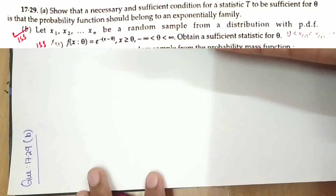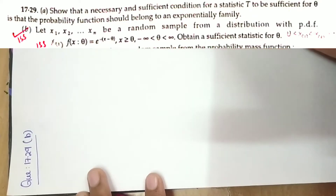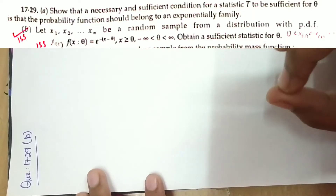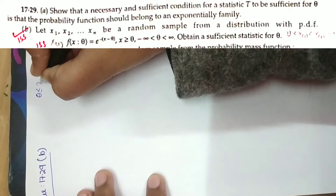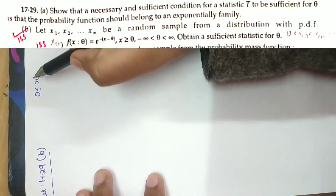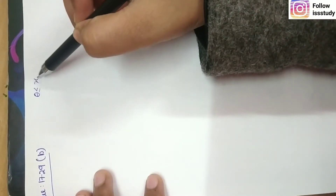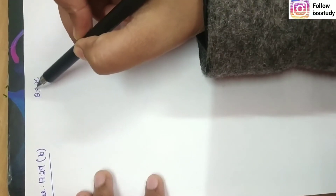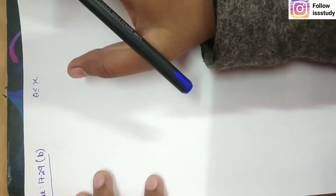Those who follow my previous videos will easily understand this. When we break the statistic in order, we use order statistics. Since the lower limit is theta, we write theta ≤ x. When we break x into order statistics, we get X(1), X(2), ..., X(n). Since theta represents the lower limit, X(1) is the minimum, and X(1) will be sufficient for theta.